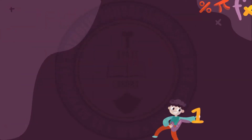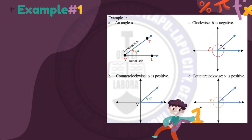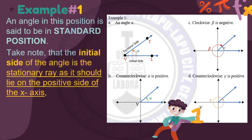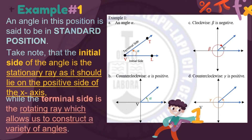In the figures at the right, we may consider the vertex V to be the origin of the rectangular coordinate system, and let the initial side of the angle lie on the positive side of the x-axis, as shown in figure B. An angle in this position is said to be in the standard position. The initial side is the stationary ray lying on the positive side of the x-axis, while the terminal side is the rotating ray, which allows us to construct a variety of angles.